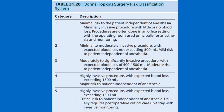The Johns Hopkins Surgery Risk Classification System classifies surgeries based on invasiveness. Category 1: minimal risk, little or no blood loss. Category 2: mild to moderate invasive procedure, blood loss less than 500 ml. Category 3: moderate to significantly invasive procedure, blood loss 500 to 1500 ml. Category 4: highly invasive procedure, blood loss more than 1500 ml. Category 5: highly invasive procedure requiring postoperative monitoring and critical care support, blood loss more than 1500 ml.